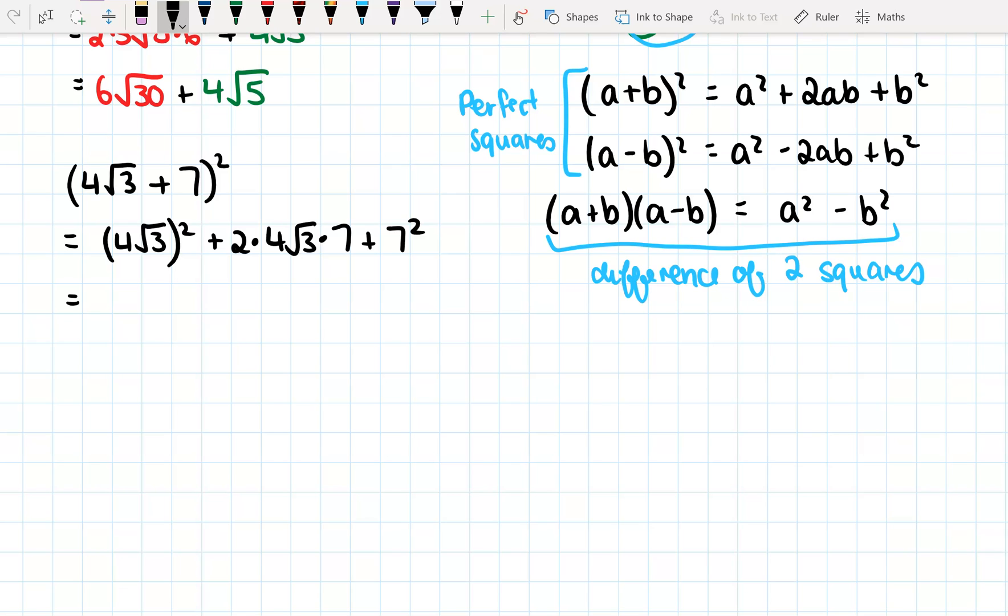Alright, now, (4√3)², 4² is 16. 16√3², remember, just becomes 3. Plus 2 times 4 is 8. And we need to times that by 7. 7 eights are 56√3. And then plus 7² is 49.